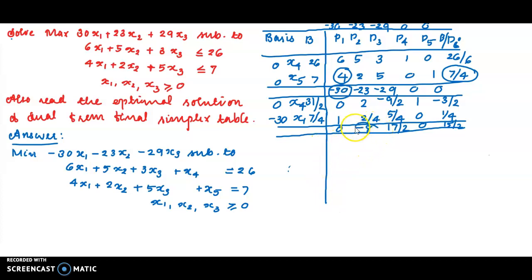Minus 8 is selected. B by Pᵢ values are 31 by 2 divided by 2, 31 divided by 4. 7 by 4 divided by 2 by 4, 7 by 2. 7 by 2 is 3 something. 31 by 4 is selected.